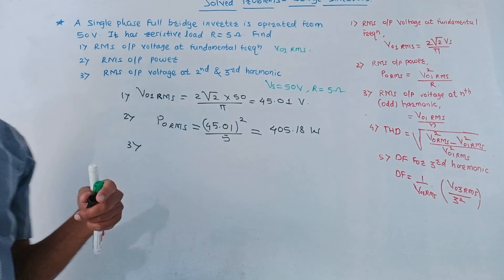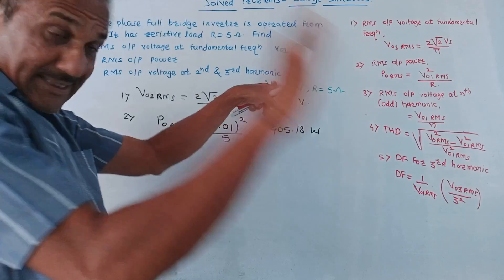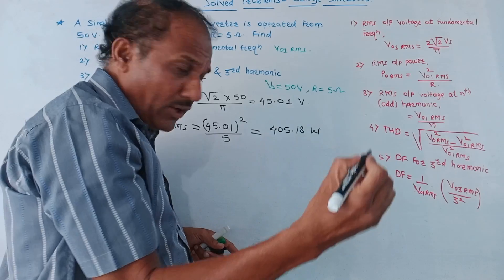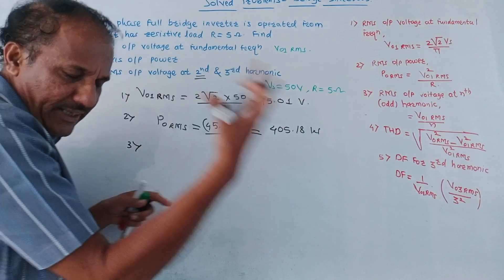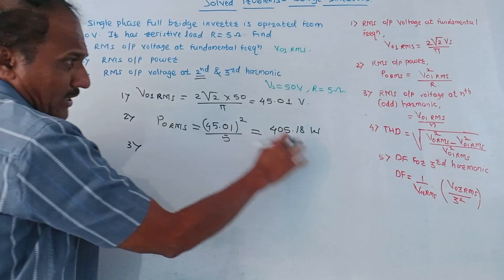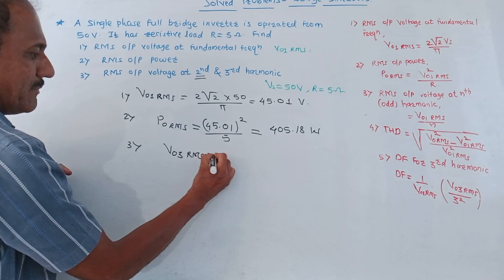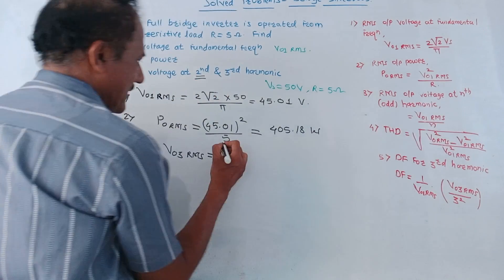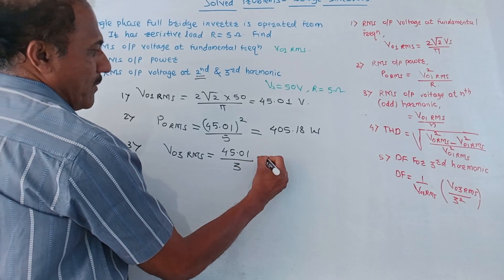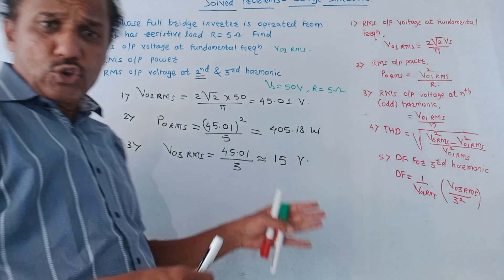Third part: RMS output voltage at second and third harmonic. For even harmonics, the RMS output voltage is zero, so directly we can write that for the second harmonic, RMS output voltage is zero. For the third harmonic, V03RMS = V01RMS upon 3 = 45.01 upon 3 ≈ 15 volt. This is the way to solve the numerical for full bridge inverters.